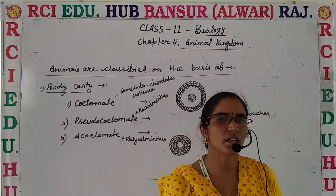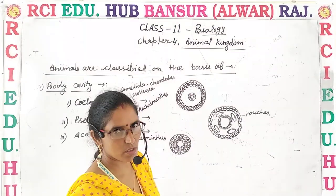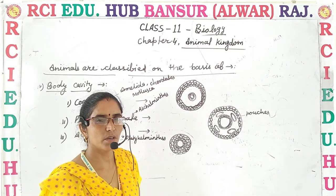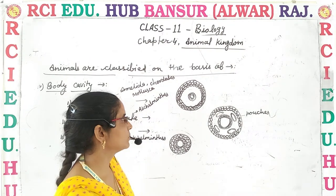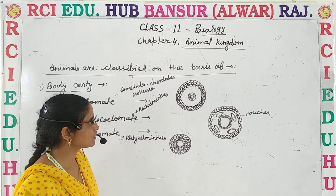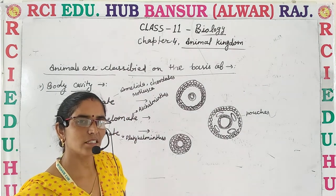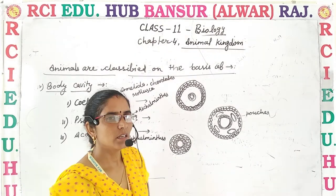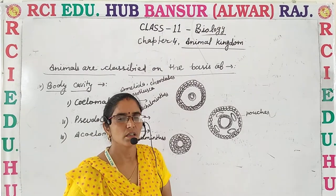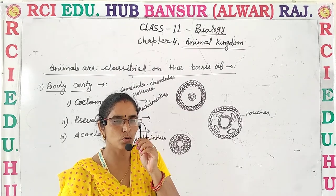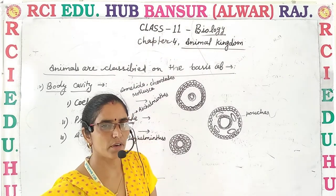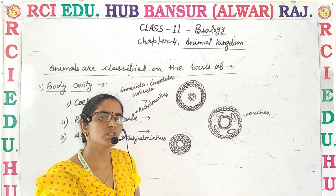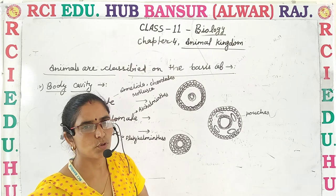Good morning, welcome to another video of RCL Education Hub Bansur. Class 11, Chapter 4: Animal Kingdom. Before that, we discussed about the three bases of classification of animals. The first basis is level of organization, in which we discussed about cellular level, tissue level, organ level, and organ system level of organization.